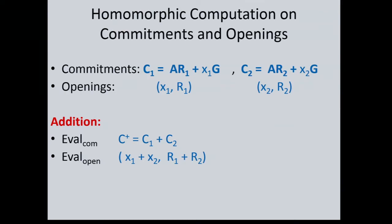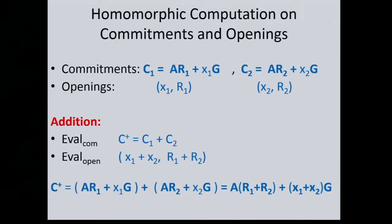Let's see how to do the homomorphic operations. For addition: just add the two commitments — this is adding ciphertexts. To operate on the openings, you add the bits and add the randomness. The commitment C+ has a correct opening that is just the sum of the two randomnesses R1 + R2. The randomness just adds up. That's really easy.